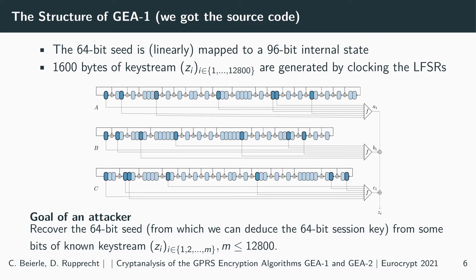In each clock cycle, the LFSRs are clocked by feeding the output bit into several positions via XOR. From each LFSR, seven taps feed into a function F, and the output bits of these three F functions are added together to produce one bit of the keystream. In each frame, 1,600 bytes of keystream are generated — 12,800 bits. The attacker's goal is to recover the 64-bit seed, from which the session key can then be recovered. The bits of known keystream are limited to these 12,800 bits, which is a valid assumption from header information.